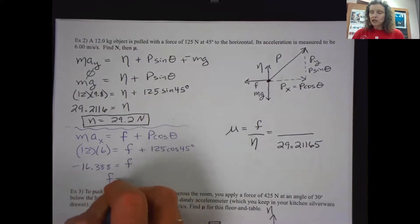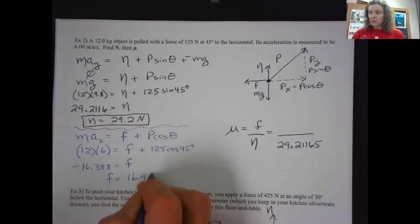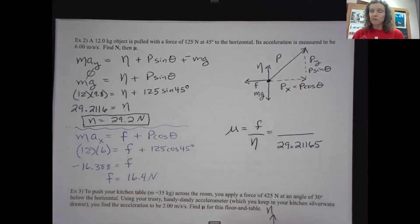So if I were asked to report friction, you wouldn't have to report it as negative. Remember, somebody could set the problem up using different conventions for signs. But anyway, the frictional force is about 16.4 Newtons.